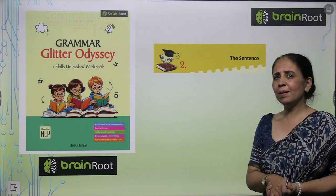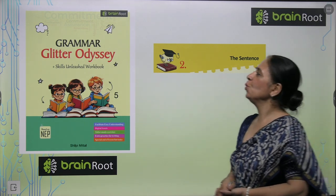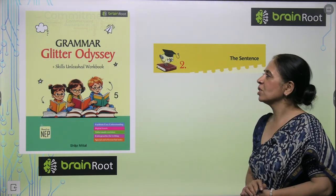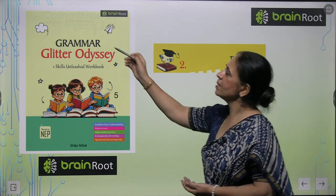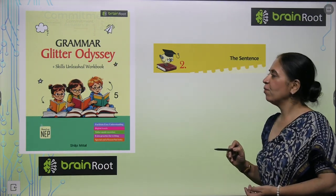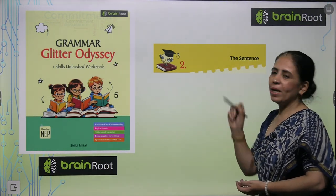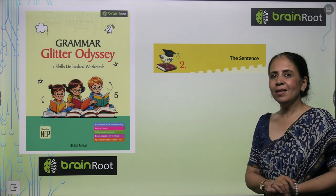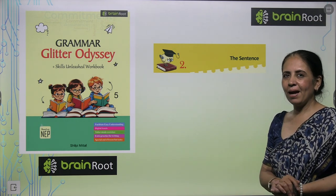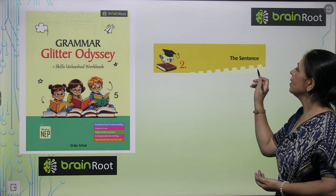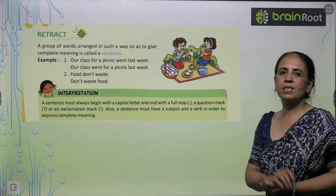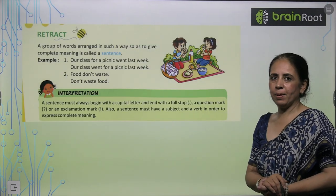Hello children, welcome to your new book by Brain Root. This is Grammar Glitter Odyssey for grade 5. We are starting with chapter number 2 — The Sentence. So we start with the chapter.